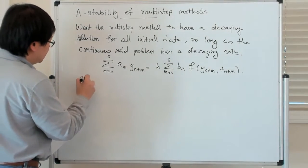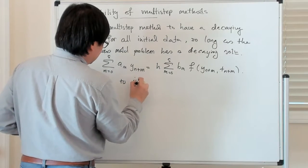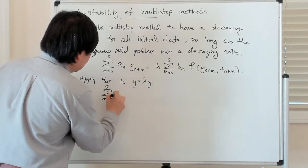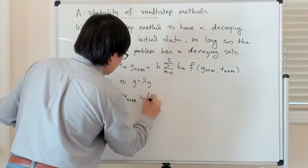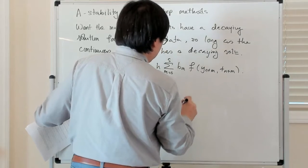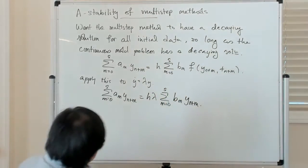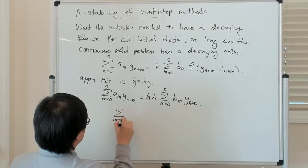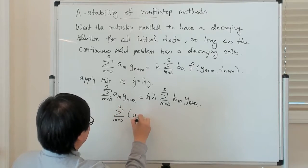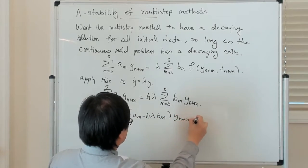We want to apply this to our model linear differential equation, which is y-dot equals λy. What you end up getting is: the sum from m equals 0 to s of a_m y_{n+m} equals hλ times the sum from m equals 0 to s of b_m y_{n+m}. You can collect all these terms, giving the following linear homogeneous difference equation: the sum of (a_m − hλ b_m) y_{n+m} equals 0.